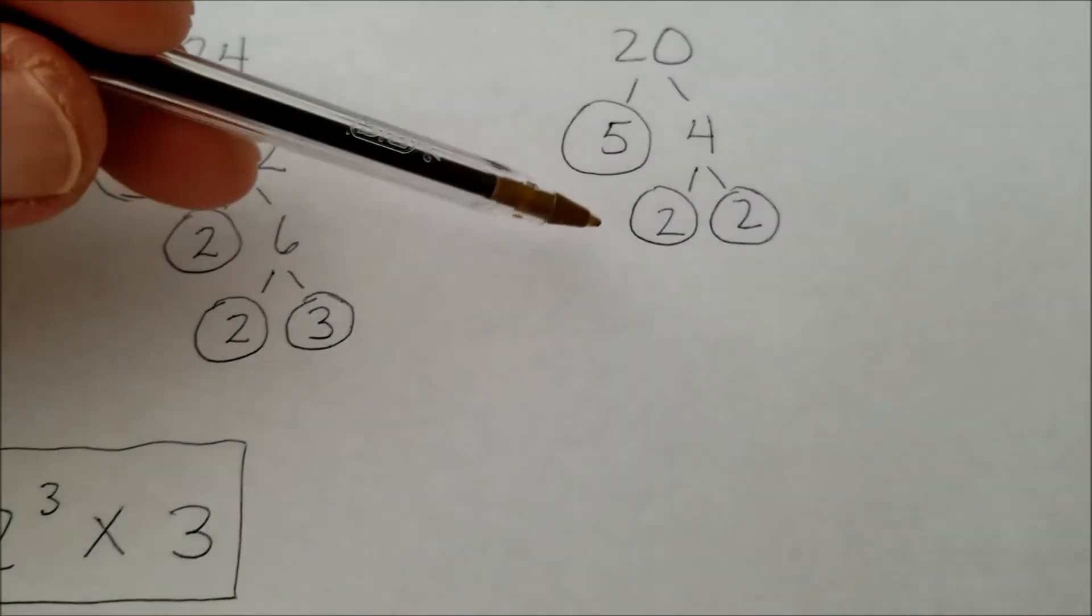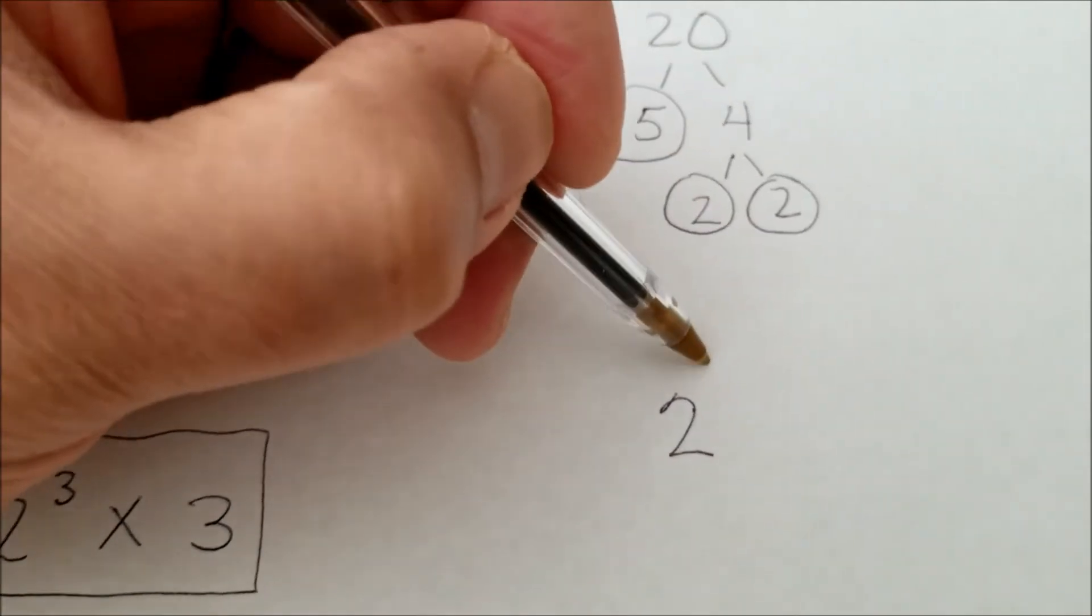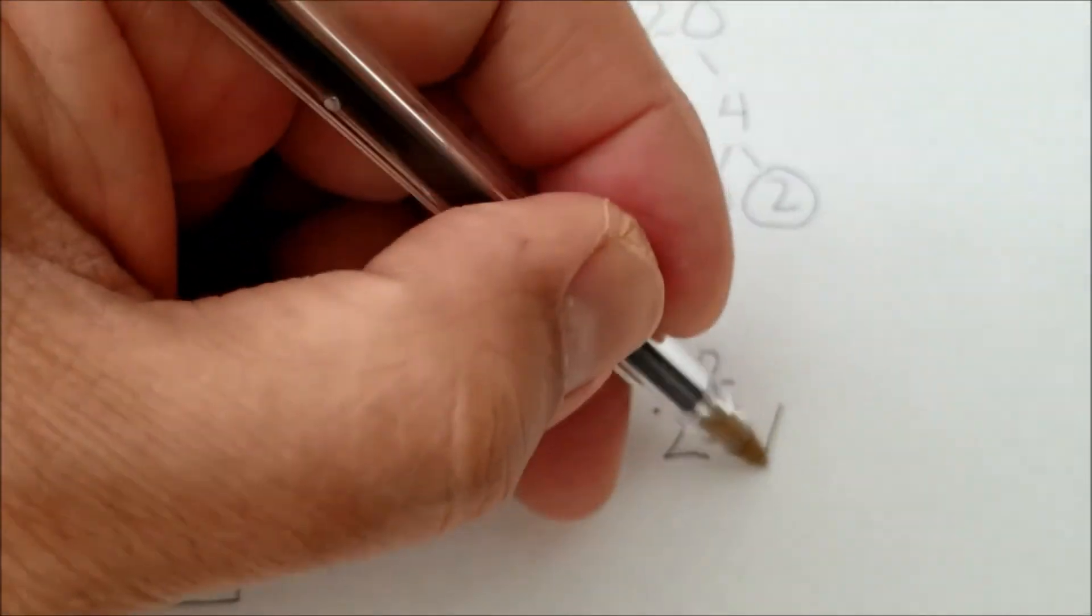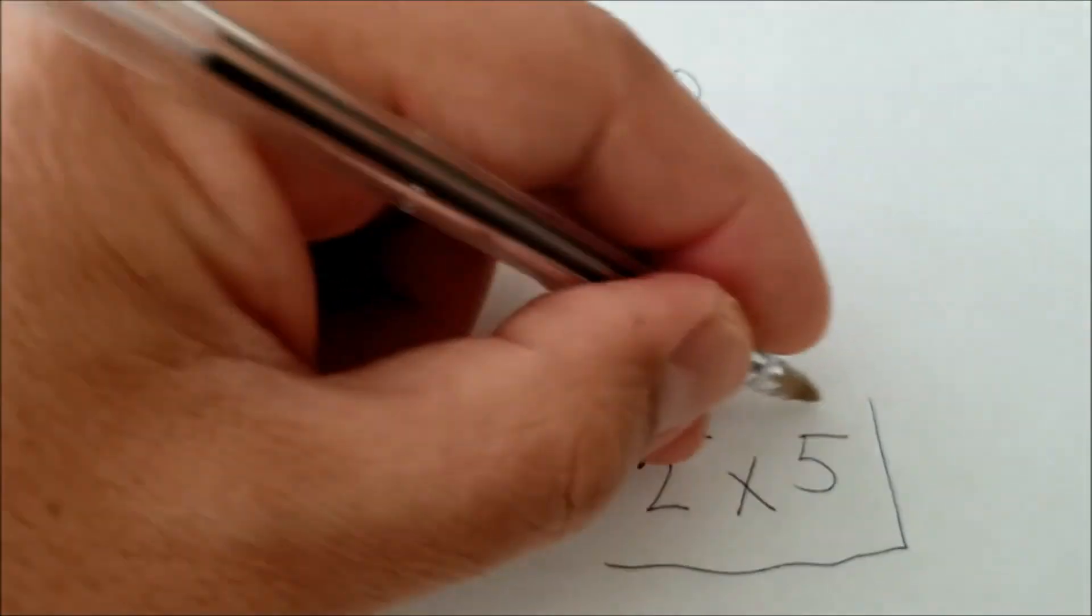Okay, so if I'm going to write the answer like I did over here, I have two 2s, so that would be 2 to the second power, times, and then 5.